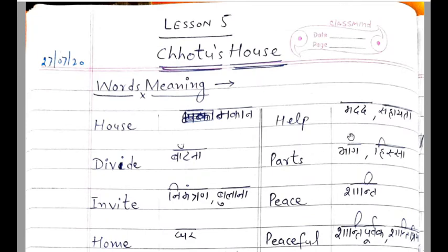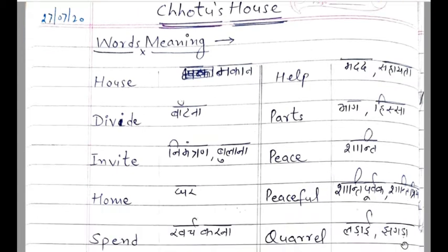Help means मदद या सहेता. Parts means भाग, हिस्सा, portion. Peace means शान्ती. Peaceful means शान्ती पूर्वक या शान्ती प्रिय.